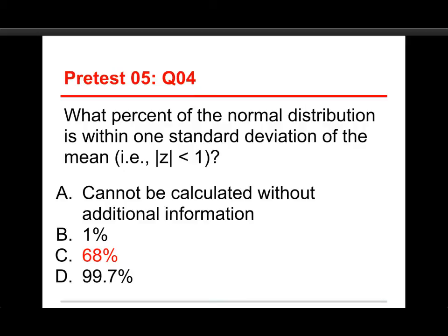Let's just take a look at how that works. Oh, by the way, cannot be calculated without additional information would be true if we did not know the shape of the distribution. But a normal distribution has a very specific shape, and so we don't have to know much. If we have z-scores and we know it's a normal distribution, we have everything we need to know in order to get proportions of the distribution.